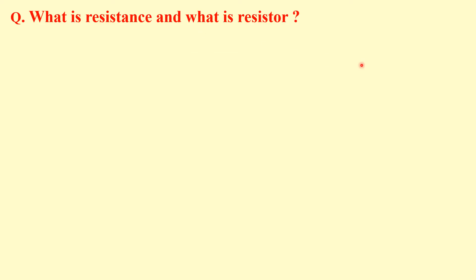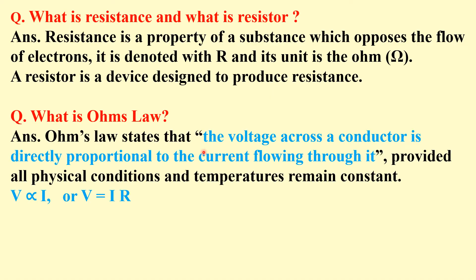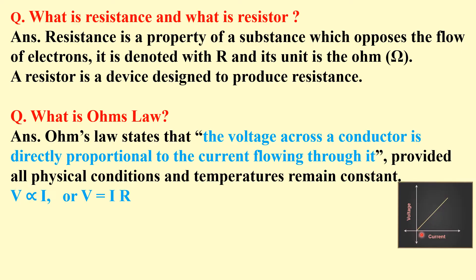What is resistance and what is a resistor? Resistance is a property of a substance that opposes the flow of electrons; it is denoted by R and its unit is Ohm. A resistor is a device designed to produce resistance. What is Ohm's law? Ohm's law states that the voltage across a conductor is directly proportional to the current flowing through it, provided all physical conditions and temperature remain constant. So V equals I times R.